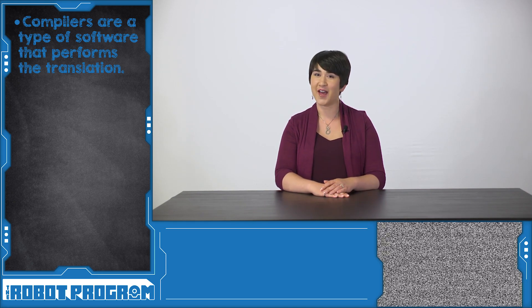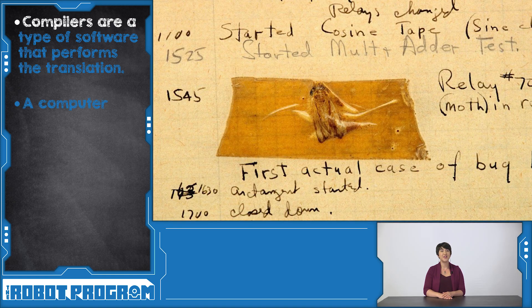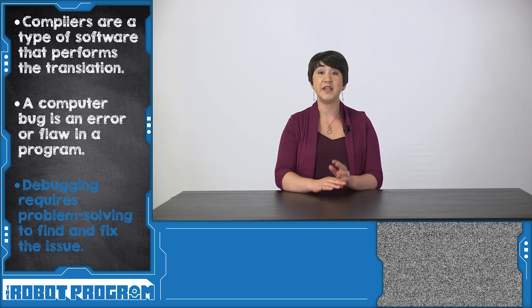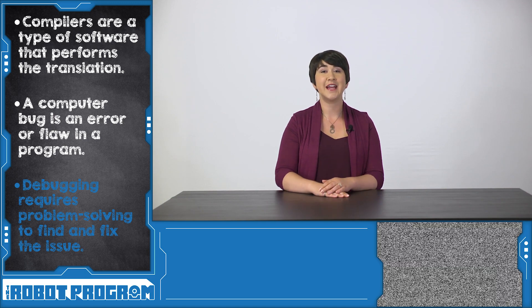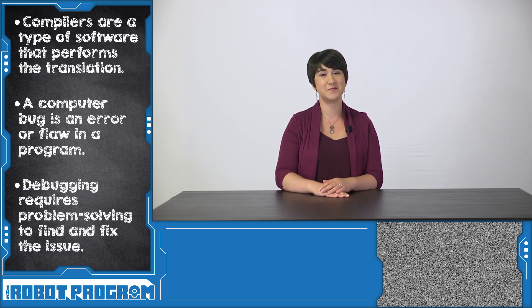Fun fact — Grace Hopper and her team actually found a moth stuck in part of their computer, which was causing issues. This led to the term "computer bug" being used to describe something going wrong in a computer program. When we debug, it's like we're removing moths that are stuck in our computers.